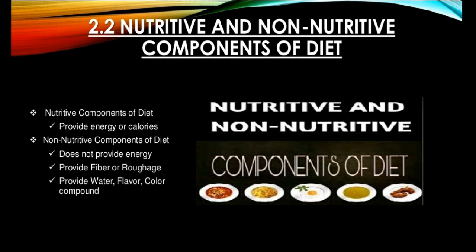We are going to study first about the nutritive component of the diet. Nutritive components are those which provide energy or calories. Non-nutritive components are those that do not provide energy or calories. Fibers, water, colors, flavors, pesticides, residues etc. are among thousands of non-nutritive components. There may be thousands of phytochemicals which can both help us or harm us, and some are considered to check cancer initiators or promoters in the body.